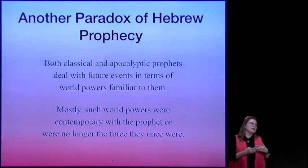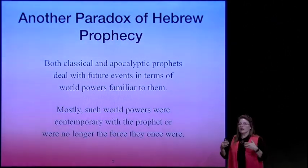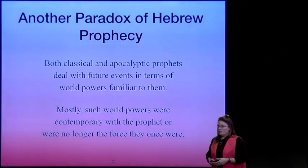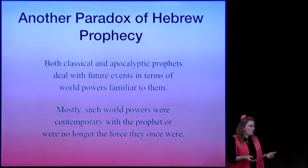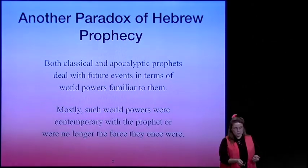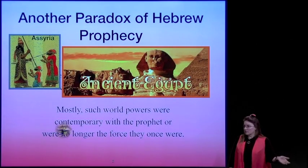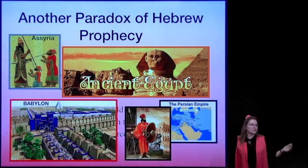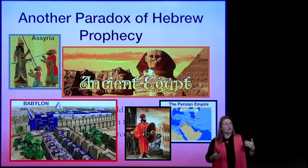What we're going to talk about right now is that they would use countries, types, shadows, and symbols of things that were familiar to them. Mostly such world powers were contemporary with the prophet or were no longer the force that they once were but familiar to the prophet. Symbols such as ancient Egypt and Assyria, which would have been more of a type of a terror reign of a world conqueror.